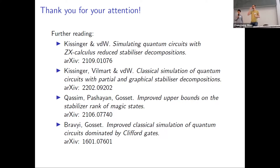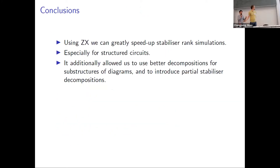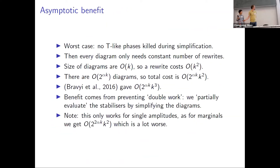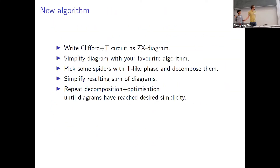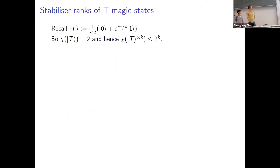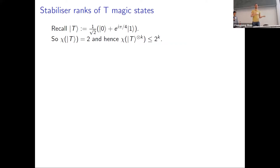Q: How naturally does this generalize beyond Clifford-plus-T to other phase gates? A: You can do it, but it works less nicely. The naive decomposition of any non-Clifford phase into two terms works and translates to ZX diagrams. The reason you expect less benefit is that with T-like phases, two T phases combined instantly become Clifford. But with an arbitrary angle α, two copies just become 2α, which is still non-Clifford. So you can reduce two things to one, but it's less elegant. It can be done, but I expect it to work much less well.